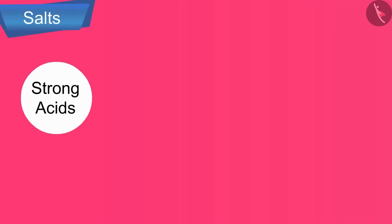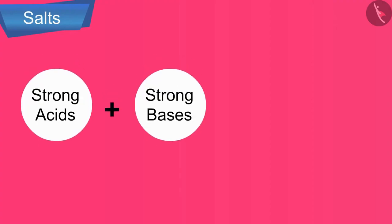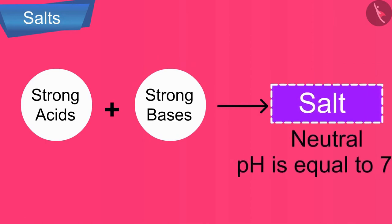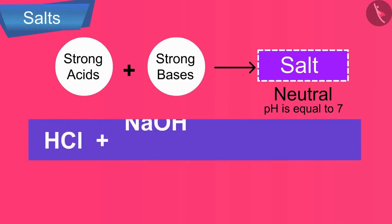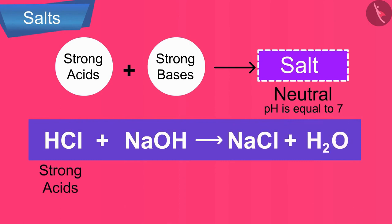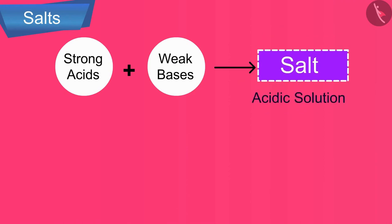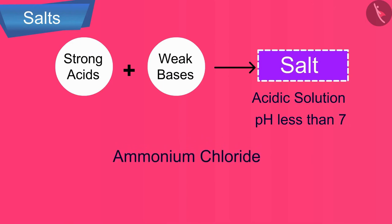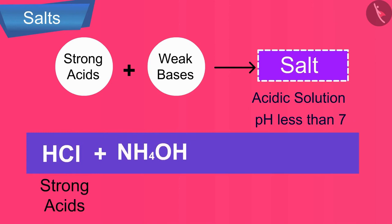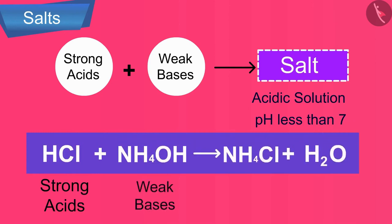Firstly, salts of strong acids and strong bases give a neutral solution with pH equal to 7. For example, sodium chloride is formed from a strong acid (hydrochloric acid) and a strong base (sodium hydroxide), so it produces a neutral salt. Secondly, salts of strong acids and weak bases give an acidic solution with pH less than 7. For example, ammonium chloride is formed from strong HCl and weak ammonium hydroxide, so the salt obtained is acidic in nature.